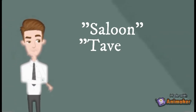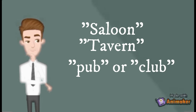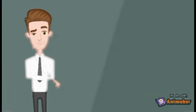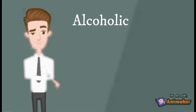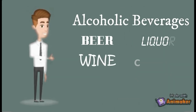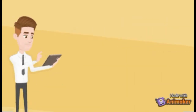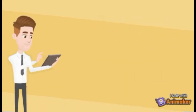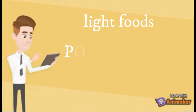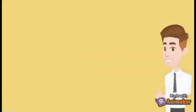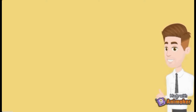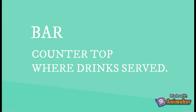Furthermore, a bar, also known as a saloon or a tavern, or sometimes as a pub or club, is a retail business establishment that serves alcoholic beverages such as beer, wine, liquor, cocktails, and other beverages such as mineral water and soft drinks. Bars often also sell snack foods such as potato chips or peanuts for consumption on their premises. Some types of bars, such as pubs, may also serve food from a restaurant menu. The term bar also refers to the countertop and area where drinks are served.